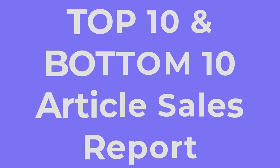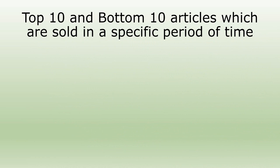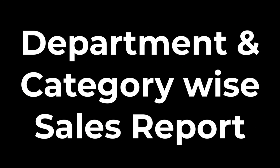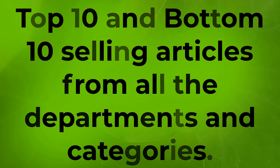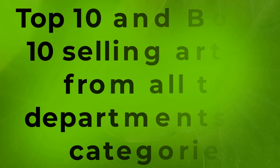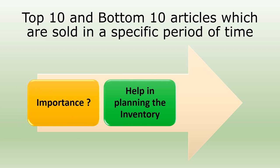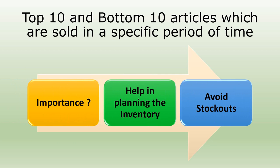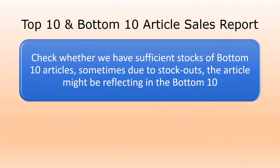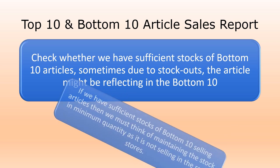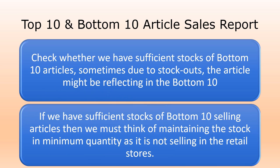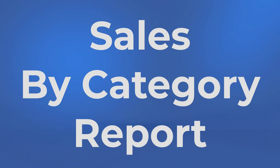The fifth report is the top 10 and bottom 10 article sales report. It contains the top 10 and bottom 10 articles sold during a specific period of time, organized department and category-wise across all departments. This report helps in inventory planning — one must ensure sufficient stock of top-selling articles to avoid stockouts. For bottom 10 articles, if sufficient stock exists, one should consider maintaining minimum quantities since those items are not selling well in the retail store.